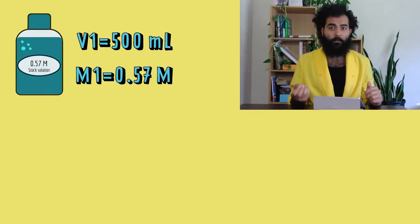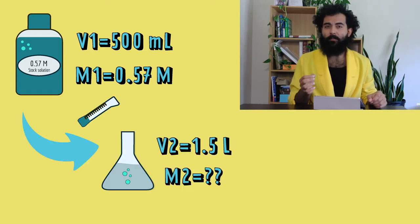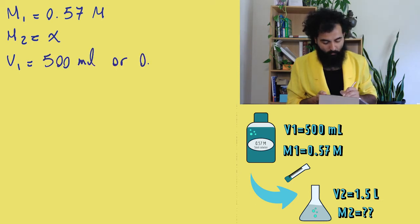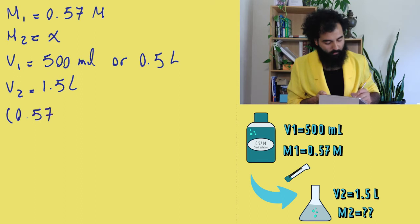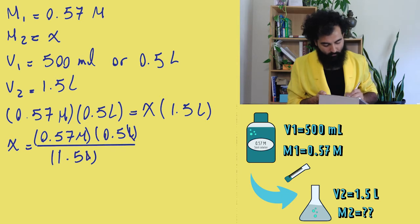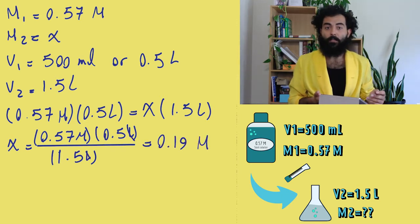If you don't include units, then you'll get a number and you have no idea what your answer means. This time, let's say you want to dilute 500 mils of a 0.57 molar solution to 1.5 liters. What would be the final concentration of that solution? M1 equals 0.57 molar, M2 equals X, V1 equals 500 mils or 0.5 liters, V2 equals 1.5 liters. 0.57 molar times 0.5 liters equals X times 1.5 liters. So now, we know that the final concentration is 0.19 molar.